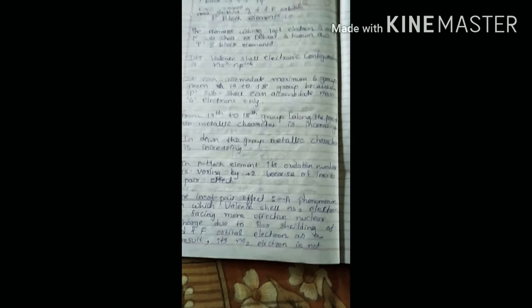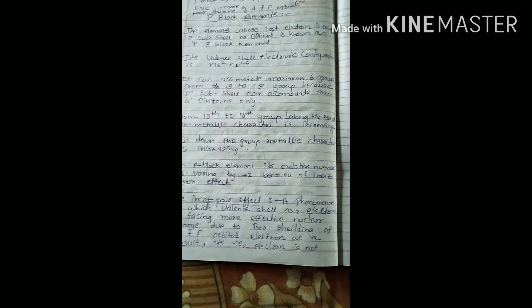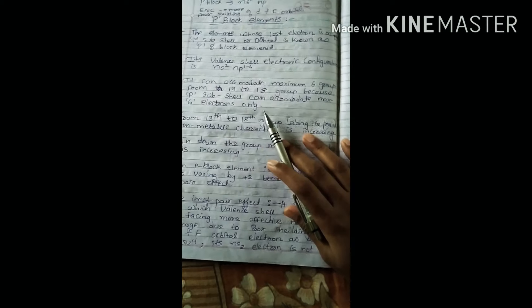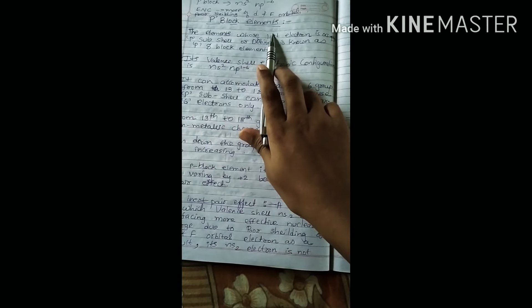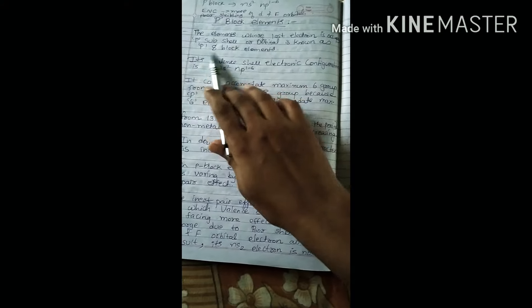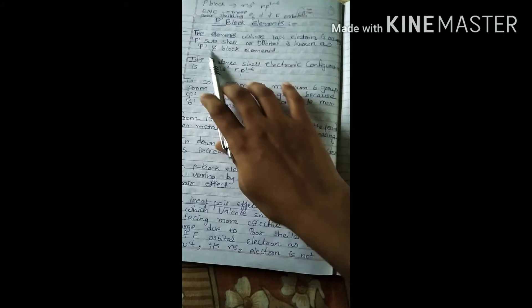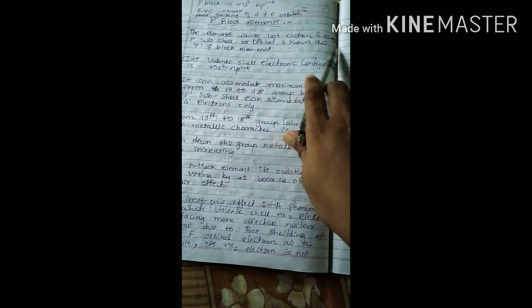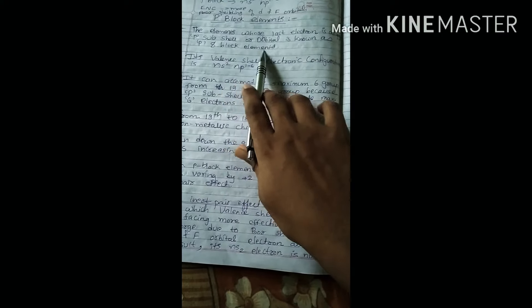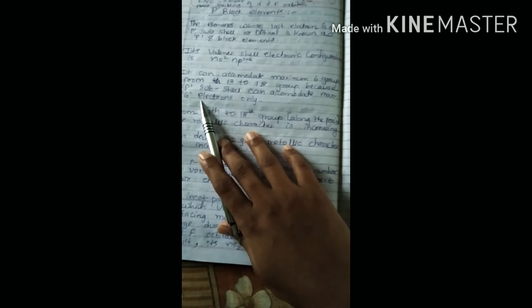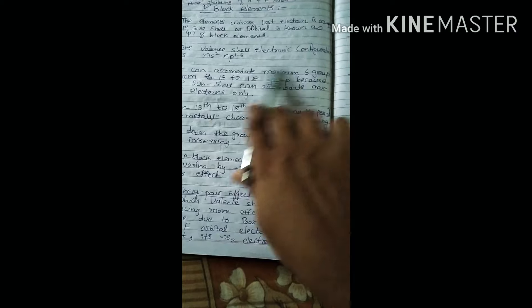Hello students, last time we completed s block elements. Today we are going to start p block elements. The element whose last electron is occupying p subshell or orbital is known as p block elements. Its valence electron configuration is ns² np¹⁻⁶.